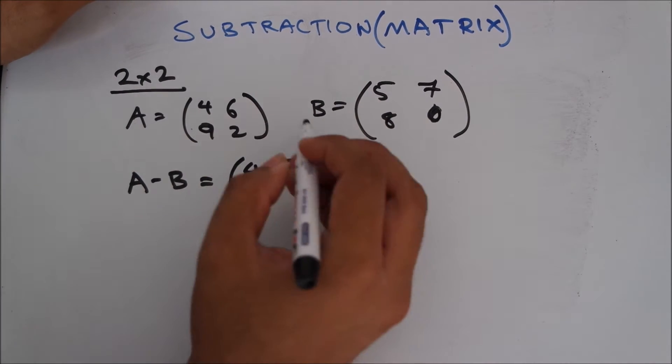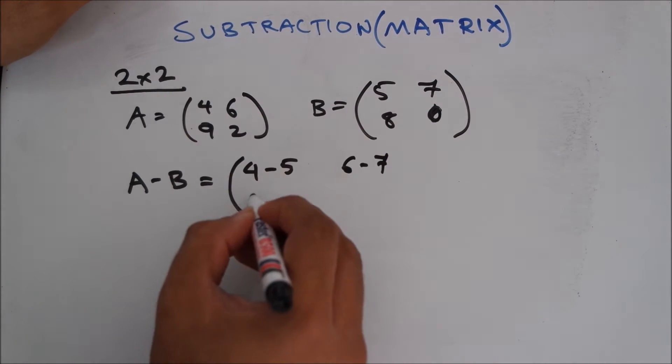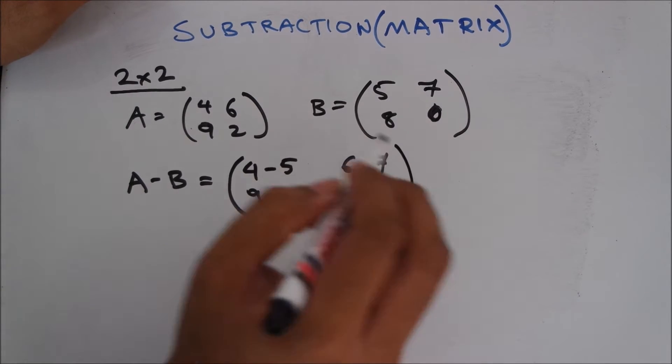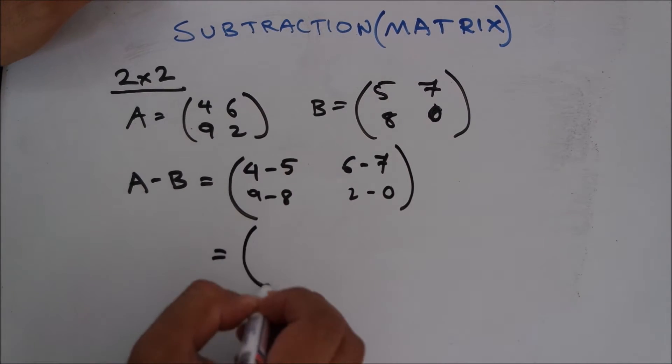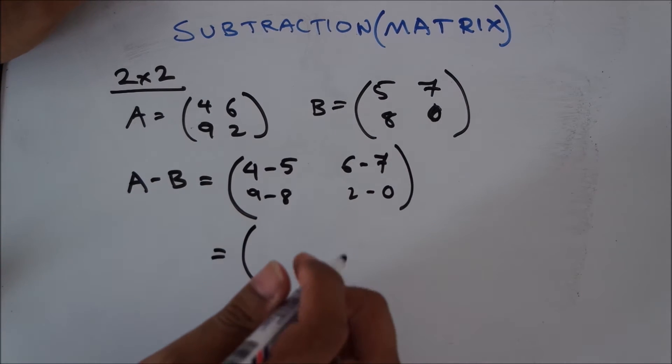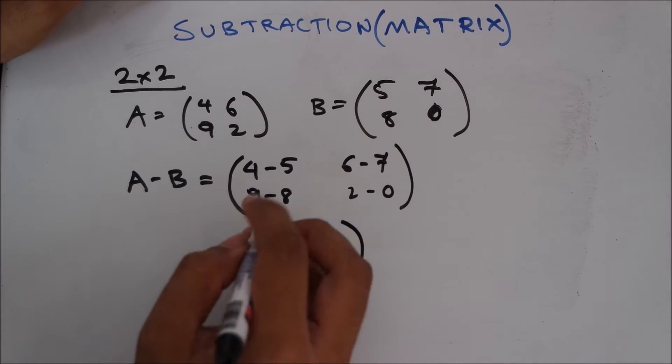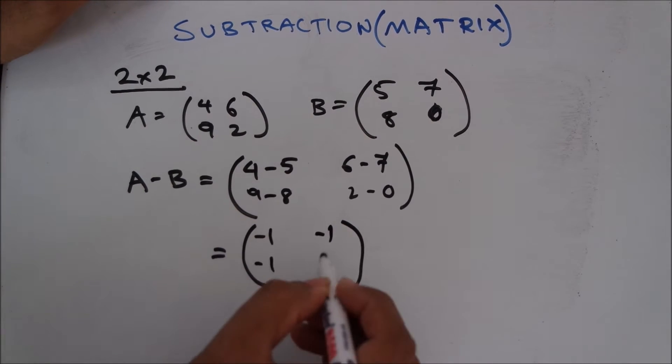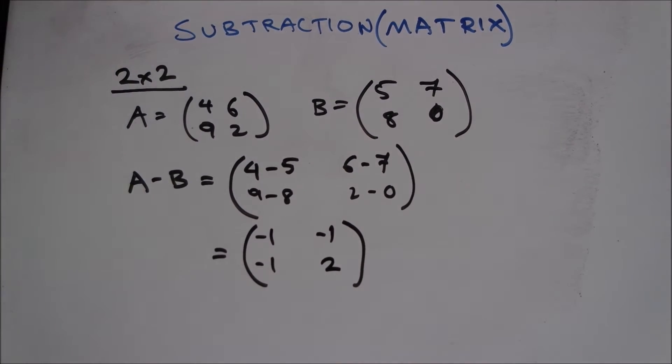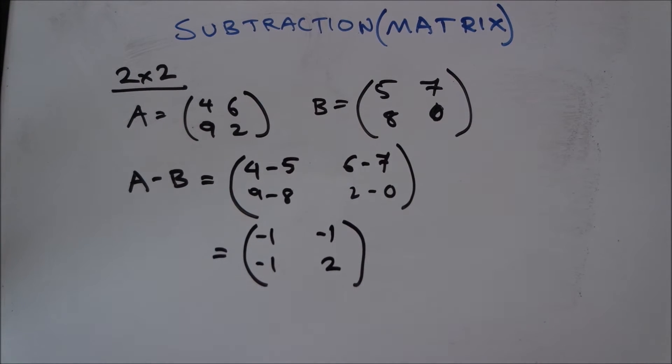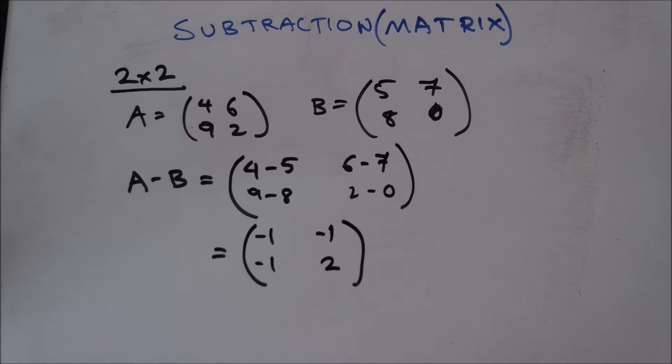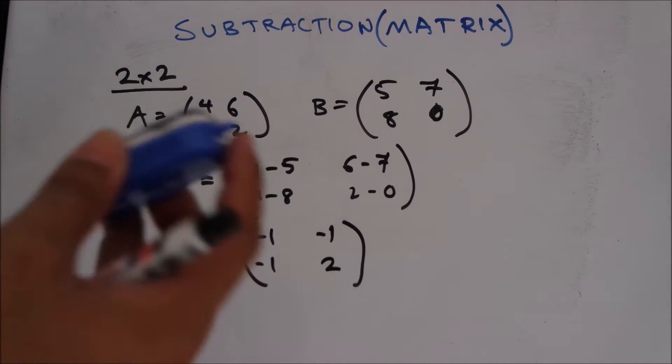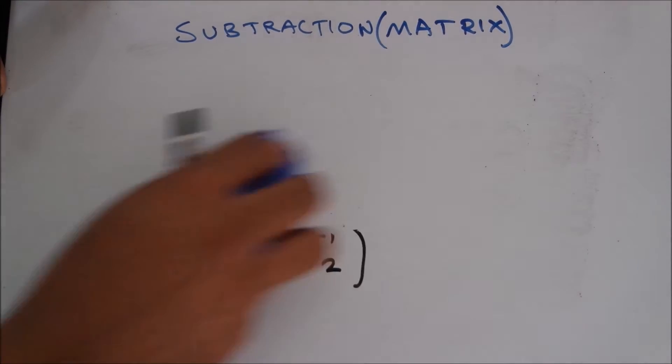4 minus 5, 6 minus 7, 9 minus 8, 2 minus 0. You can even put negative numbers inside the bracket, so that's not going to be a problem. 4 minus 5 is minus 1, 6 minus 7 is minus 1, 1, 2. So yeah, that's a 2 into 2 matrix.